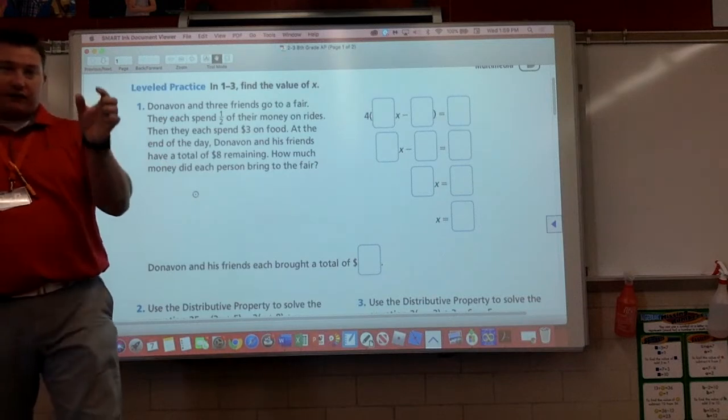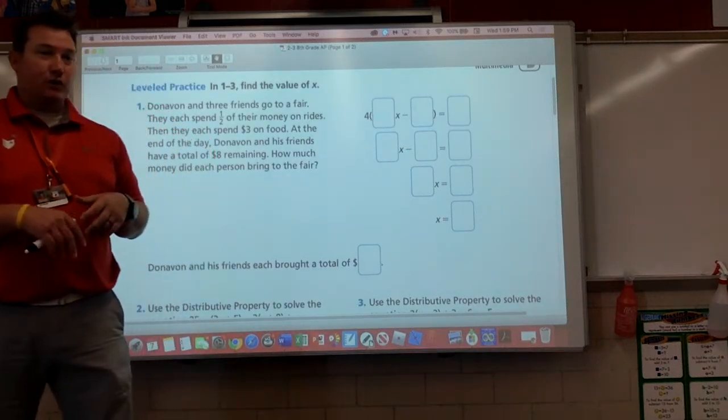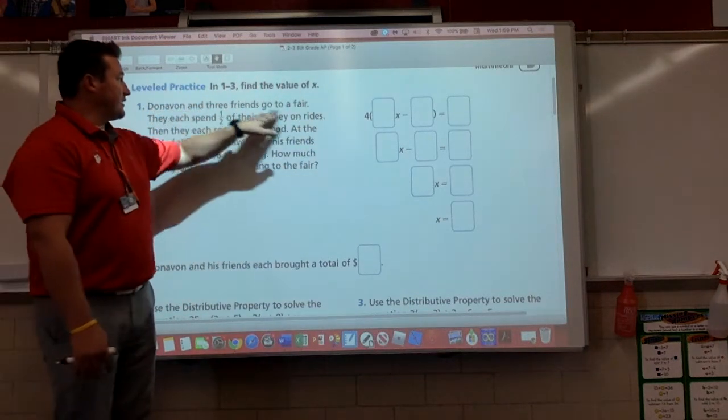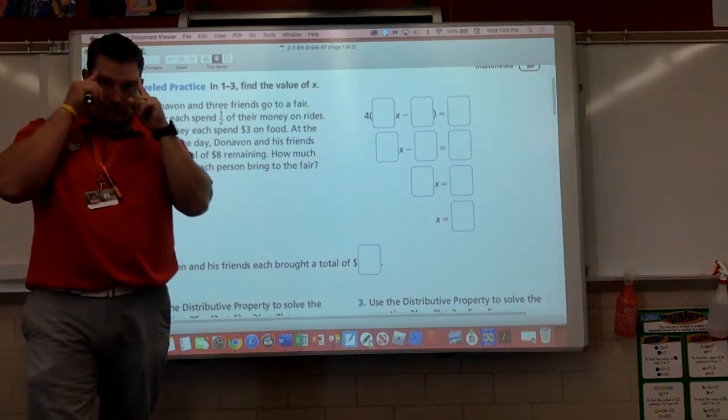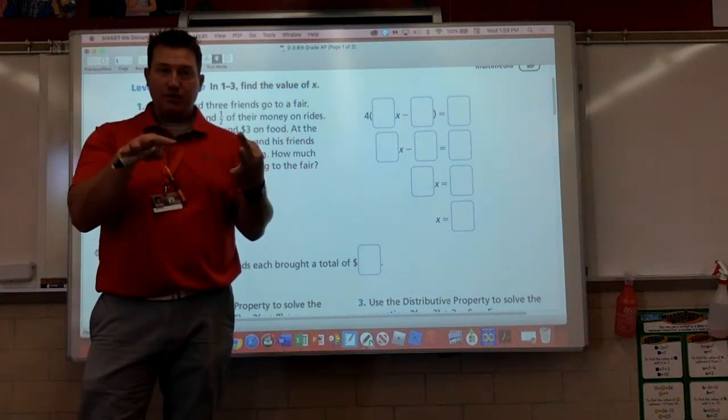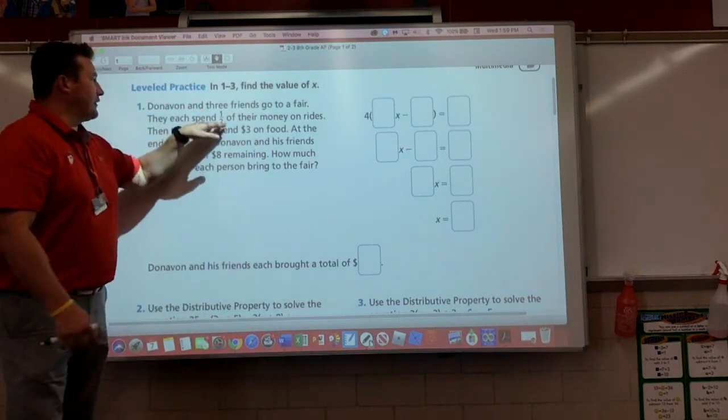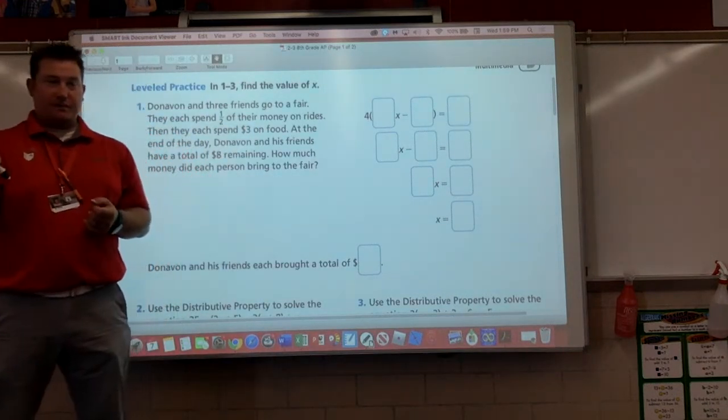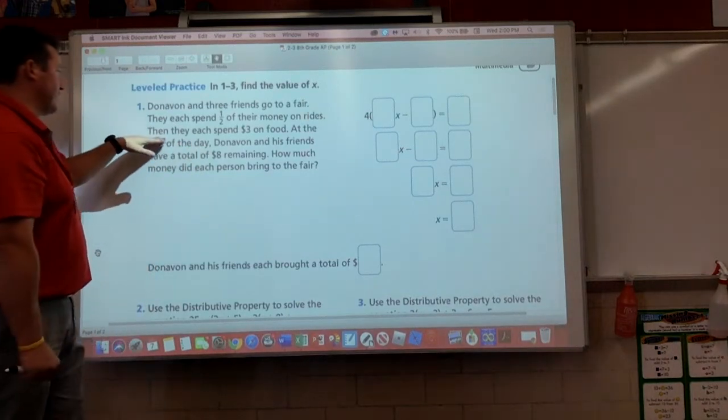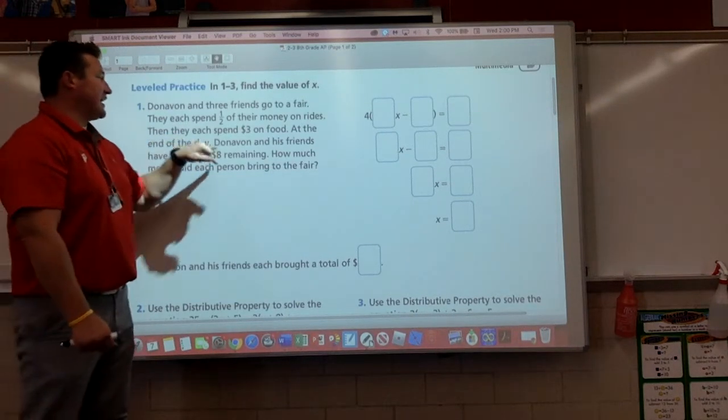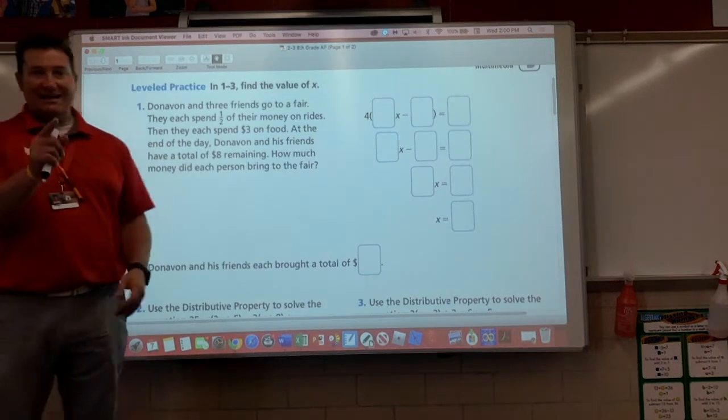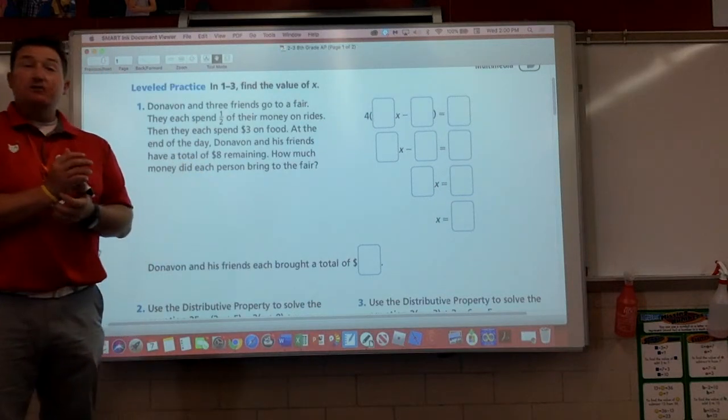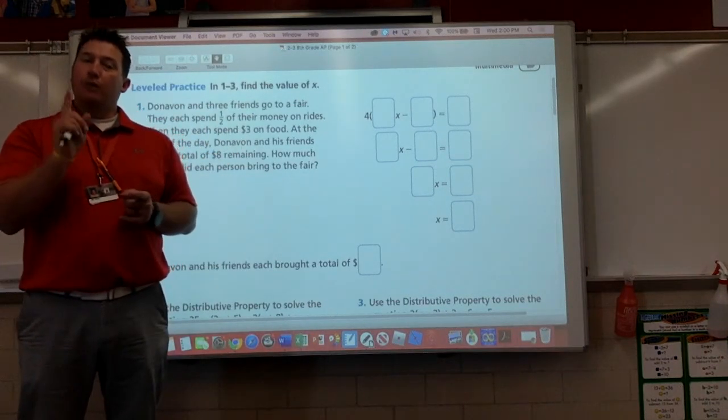Anyway, writing distributive equations, guys, is probably one of the tougher things that we'll do. We have to try to make sense of all this. Here's what we know. Donovan and his three friends go to the fair. Donovan, three friends. How many people in total is that? Keep your answer to yourself. They each spend half of their money on rides. They then spend $3 on food. So they spent money on food and rides.